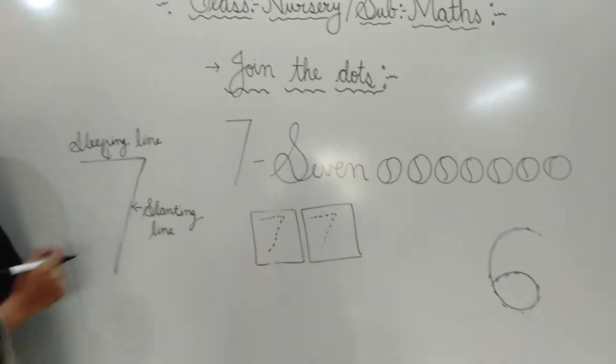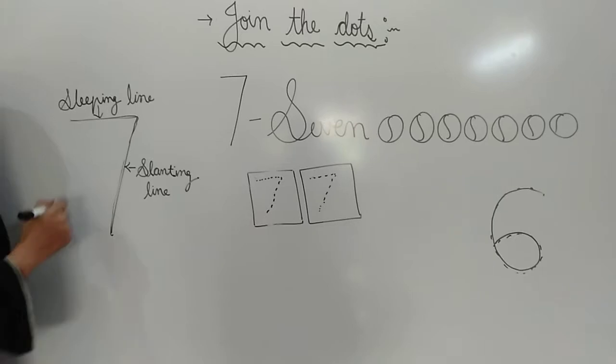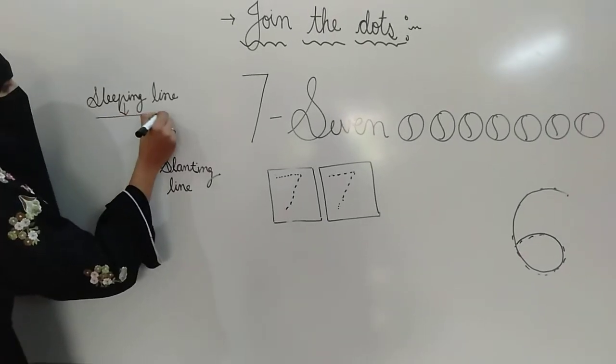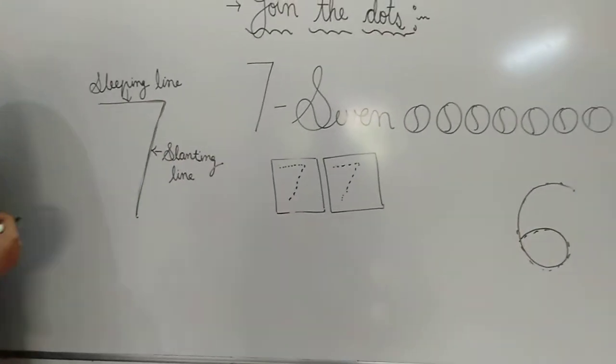Number 6. So today we write number 7. Number 7 kaise likhenge? Slipping line and slanting line. Number 7.